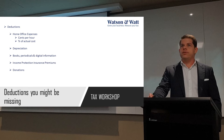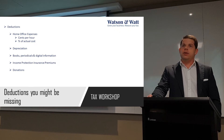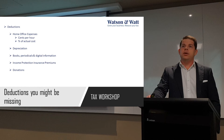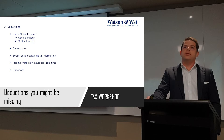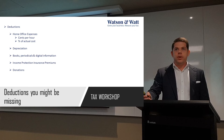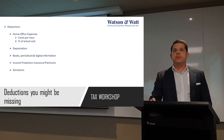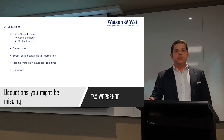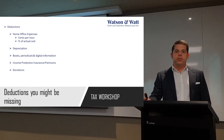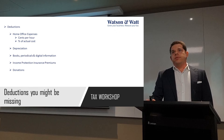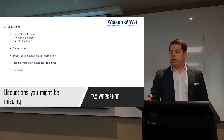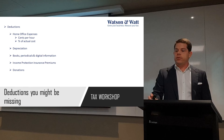These are the deductions you might be missing. Home office expenses - there are two ways you can claim this. One is cents per hour: 45 cents per hour that you work from home, provided you have a dedicated space - so you've converted a bedroom into an office and don't use it for anything else. So if you work from home two days a week, that's 16 hours a week at 45 cents, times 48 weeks a year - that gives you around $300 or so. The other method is percent of actual cost: work out the square metres of the home office divided by the total square metres of your house, and then claim your electricity and gas costs. If you're running a business from home you can also claim part of the rent, but if you're working from home in a regular job you can't claim the rent or mortgage repayments. This can be a couple hundred dollars a year that you get back.